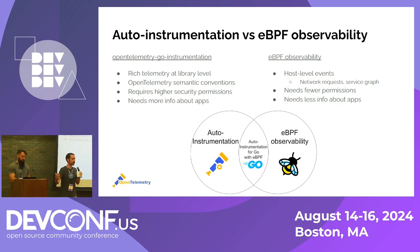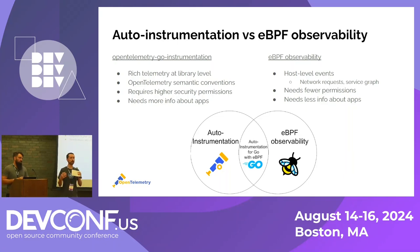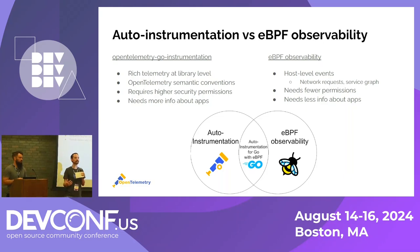eBPF is already popular for observability, offering things like process-level events and network requests. Tyler talked about how auto-instrumentation is already popular in OpenTelemetry, and we're bringing both of these concepts together for Go in what we think is a novel way we haven't seen done before. The big difference between what we're doing and existing eBPF observability is that we're also writing into user space memory itself — which comes with security implications we'll discuss. The agent needs to know a lot about the application, but when you can read from the code and write into the code, you get much richer telemetry at the library level within a statically compiled application.